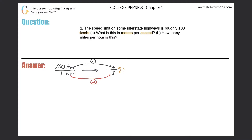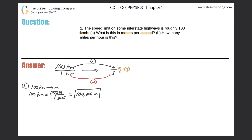Step one: 100 kilometers converted into meters. So we're given 100 kilometers, and I'm going to put kilometers in the bottom so those units will cancel. I know the relationship between kilometers and meters, so I can put meters on the top — the relationship is 1000 meters equals one kilometer. Multiplying across: 100 times 1000 gives 100,000 meters.